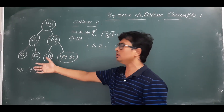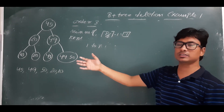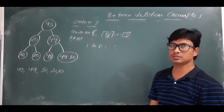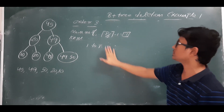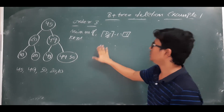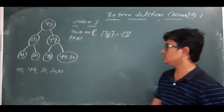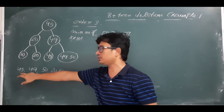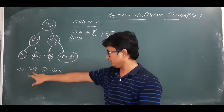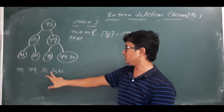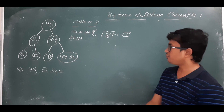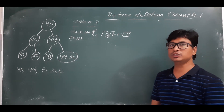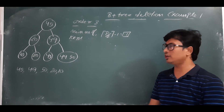If the number of elements in a node is less than 1, we call it an underflow condition. Whenever there is an underflow, we follow the steps discussed in the other video. In this video I will demonstrate with an example. We will delete elements in this sequence: first 45, then 49, 50, 20, and 10.